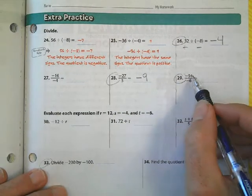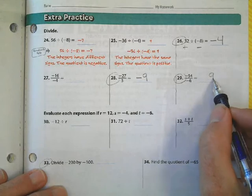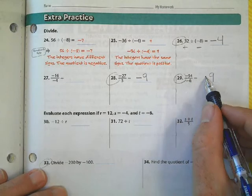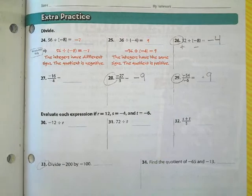There's one more since we're here. 54 divided by 6 is 9, but a negative and a negative are the same, so that becomes a positive answer right there.